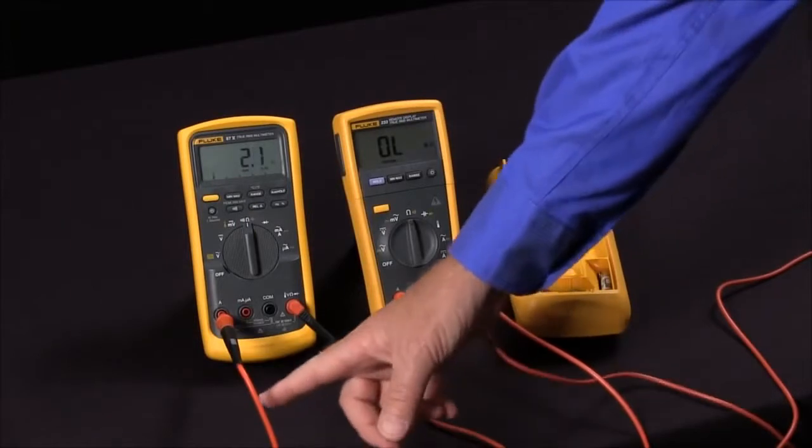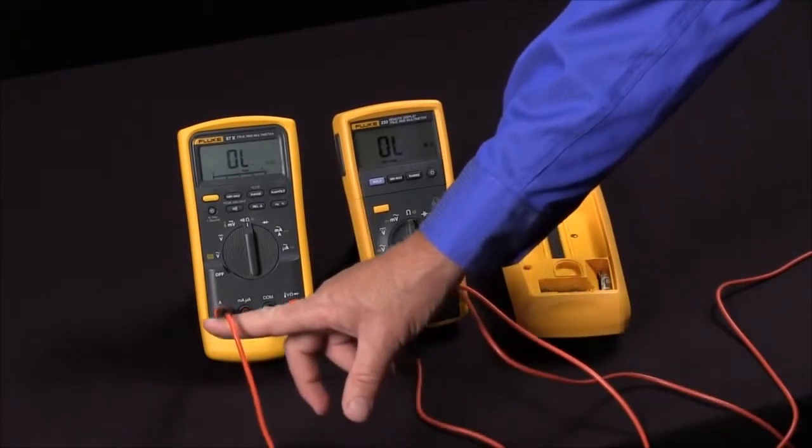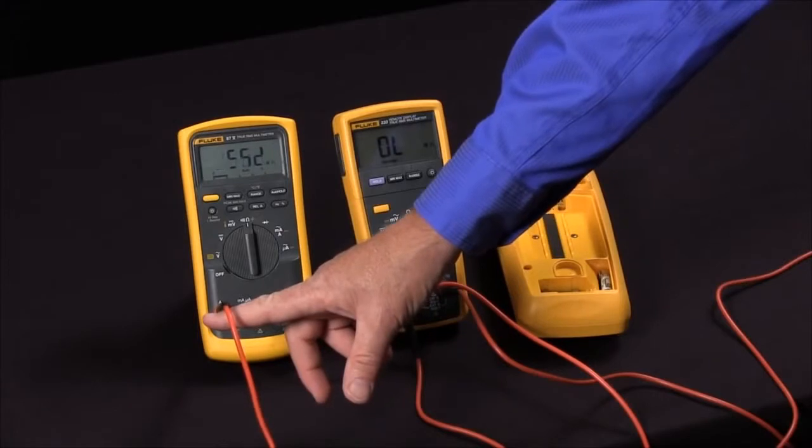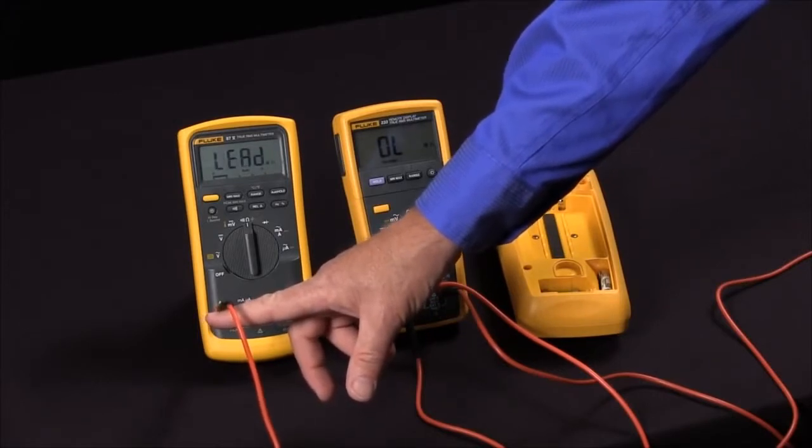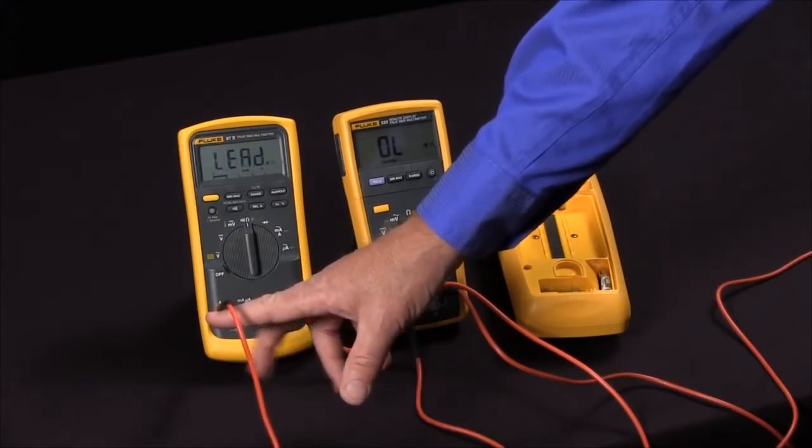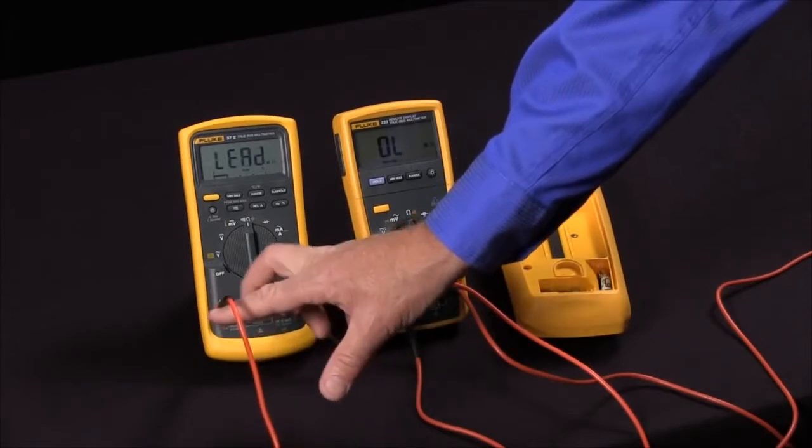One thing nice about the Fluke 87 is they have this lead alert function. So if you're trying to take a measurement with the leads in the wrong jack, it will actually give you an indication. This is also an indication that your fuses are okay.